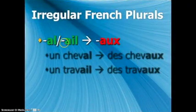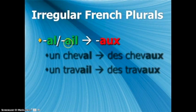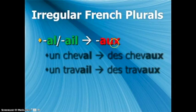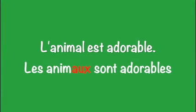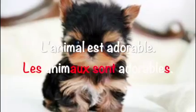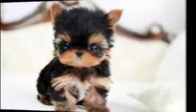This category covers words that end in AL, like cheval, or AIL, and those are going to change to AUX. In the sentence, l'animal est adorable, you will have to change the ending of animal from AL to AUX. To make the whole sentence plural, you will have to change the article, but also change est to sont, and add an S at the end of adorable. So it reads: les animaux sont adorables.